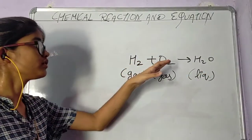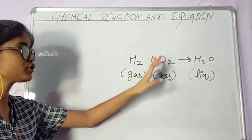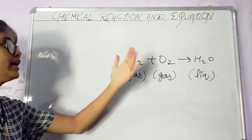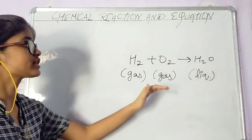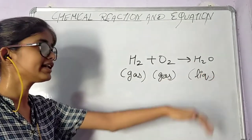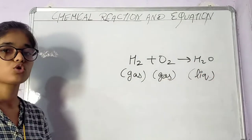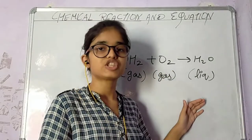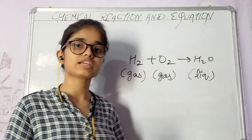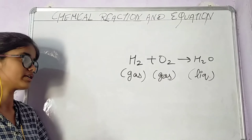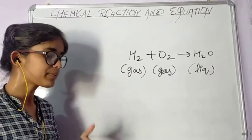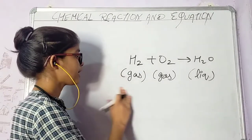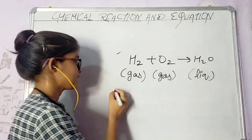The hydrogen and oxygen, which are in gas form, change their state to liquid when they form water. So when a new product is formed, its physical and chemical properties can also change. Now let us understand what a chemical equation means and how to write one.